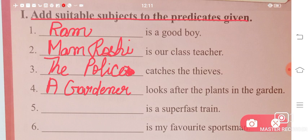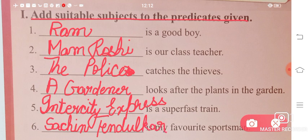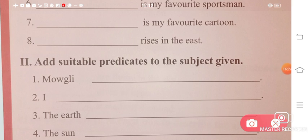Number five: 'Dash is a super fast train' - Intercity express is a super fast train. You can write any name. This is not a fixed answer. Like we make sentences, it's that type. Whatever you like, you can write that subject according to your choice. 'Dash is my favorite sportsman' - Sachin Tendulkar is my favorite sportsman. Whatever sportsman is your favorite, you can write that name. Next number seven: 'Dash is my favorite cartoon' - Shin chan is my favorite cartoon. Number eight: 'Dash rises in the east' - The sun rises in the east.